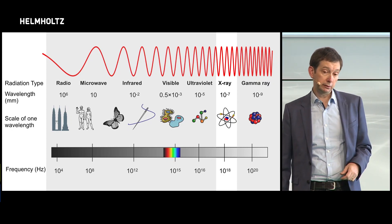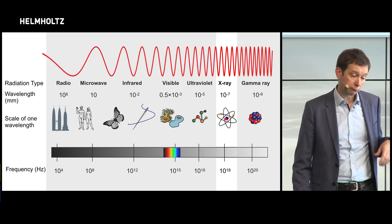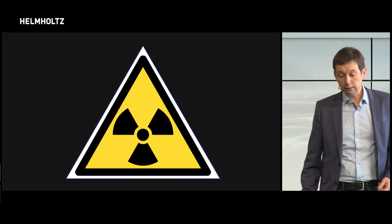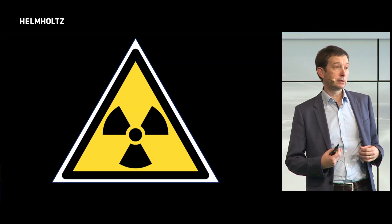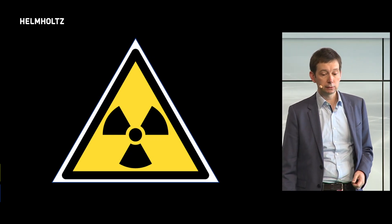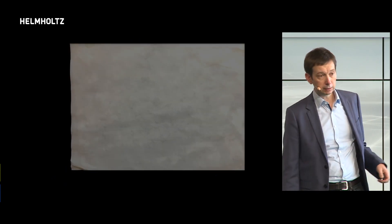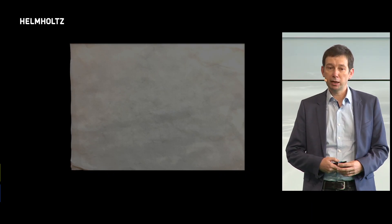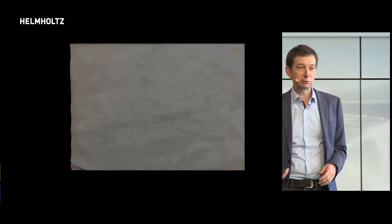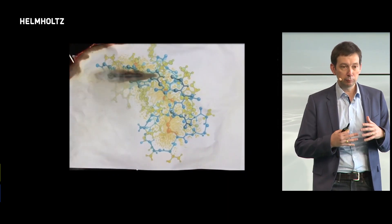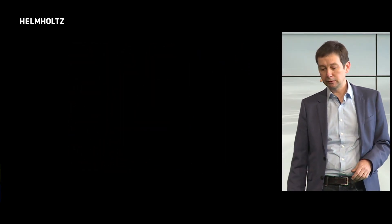As we've heard from the previous speakers, this radiation is pretty energetic. It's ionizing, it breaks bonds, it destroys the very structure that we're trying to examine — so this is a problem. It's a bit like trying to read a message on light-sensitive paper: to read the message, we have to turn on the light, but when we switch on the light, we burn up the paper and only get a brief glimpse of the message.